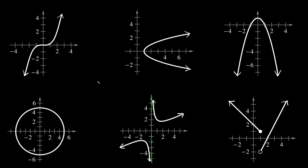In this video I'm going to teach you how to use the vertical line test to determine if a graph is a function. The vertical line test basically says if you draw a single vertical line through any graph, it can only intersect that graph at a single point. If you draw a vertical line anywhere on the graph and it intersects it at two or more points, then it is not a function. But if a vertical line only intersects the graph at a single point, then it is indeed a function.